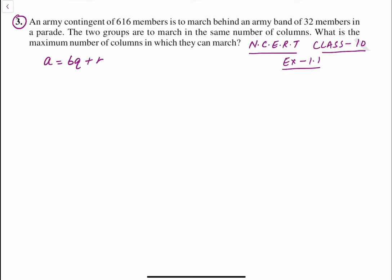A is the dividend, B is the divisor, Q is the quotient which is multiplied with the divisor plus R is the remainder. So in this form we will solve this question.